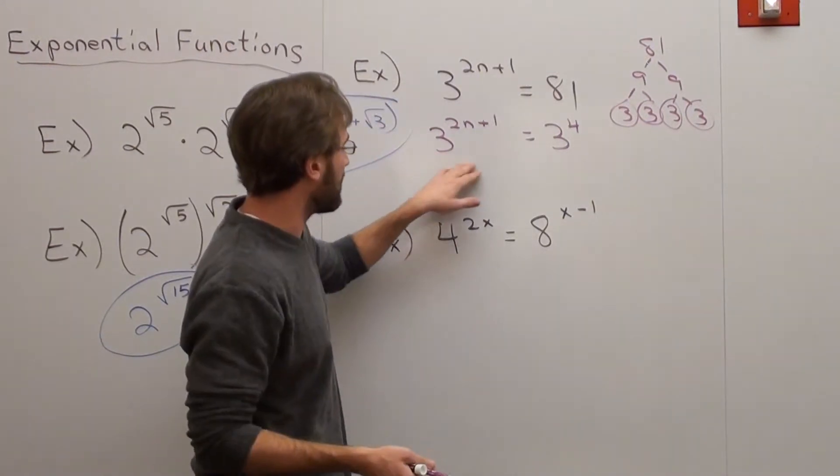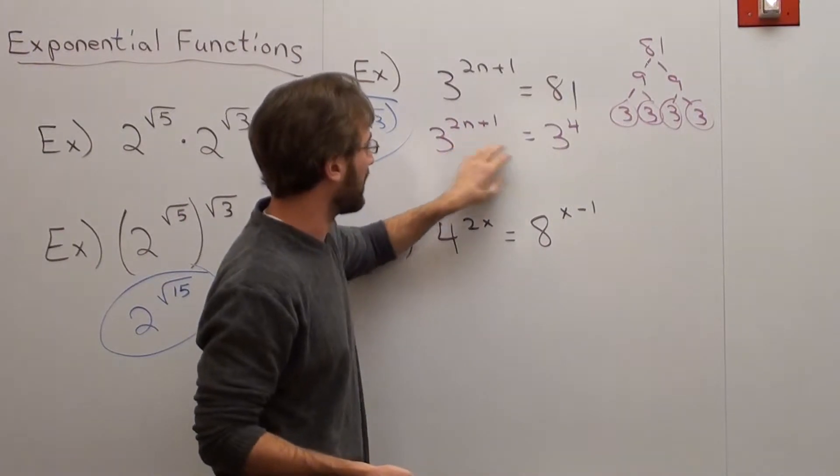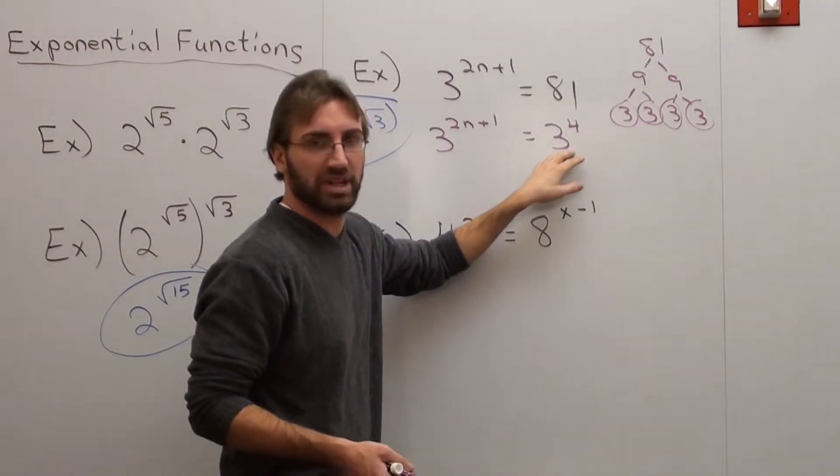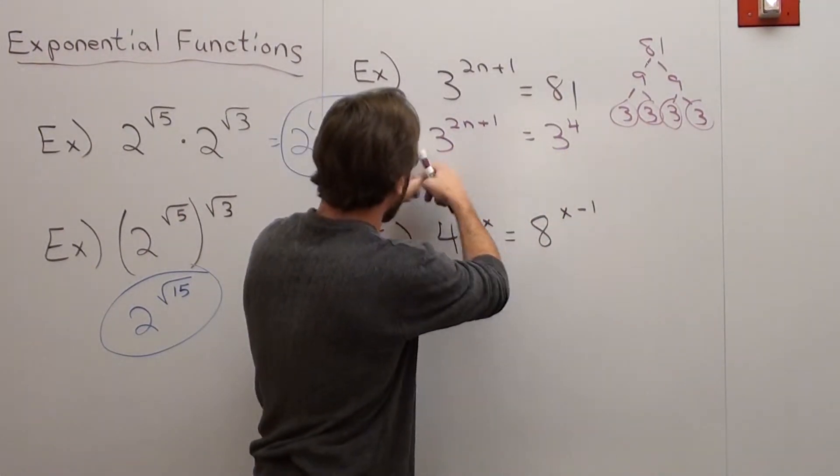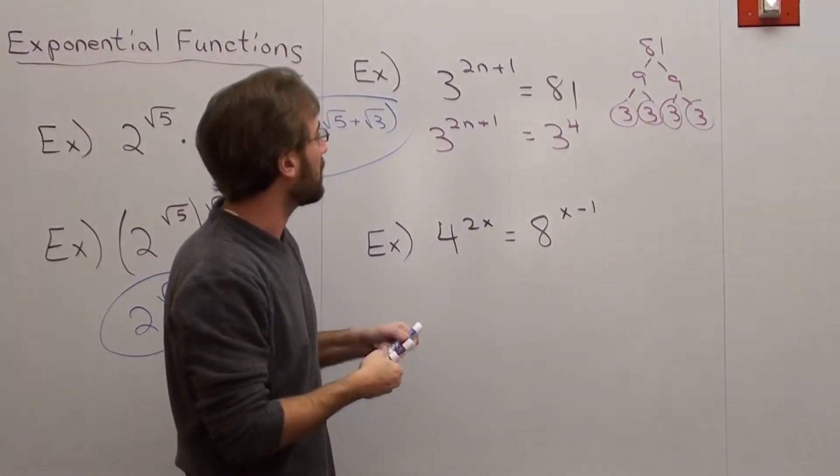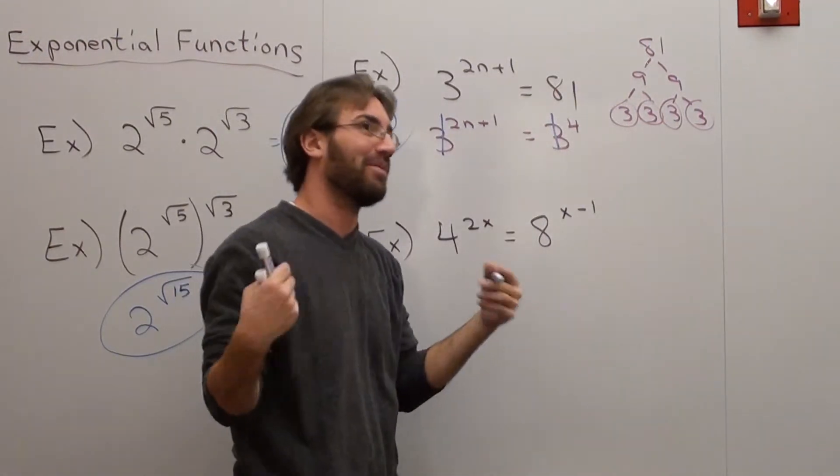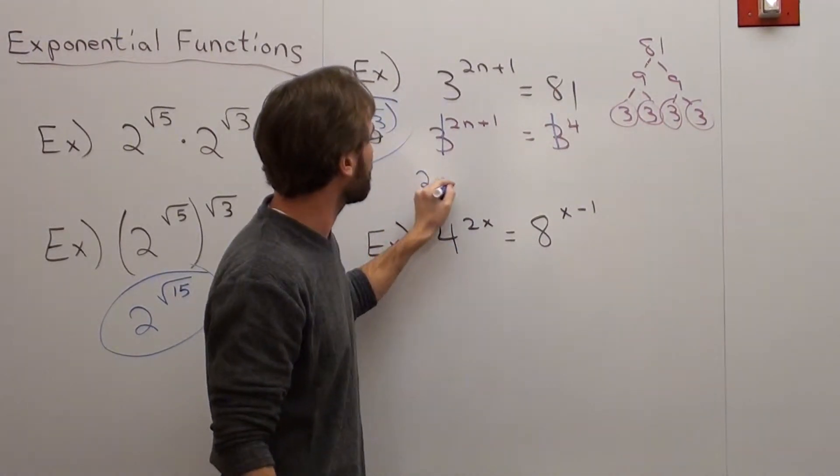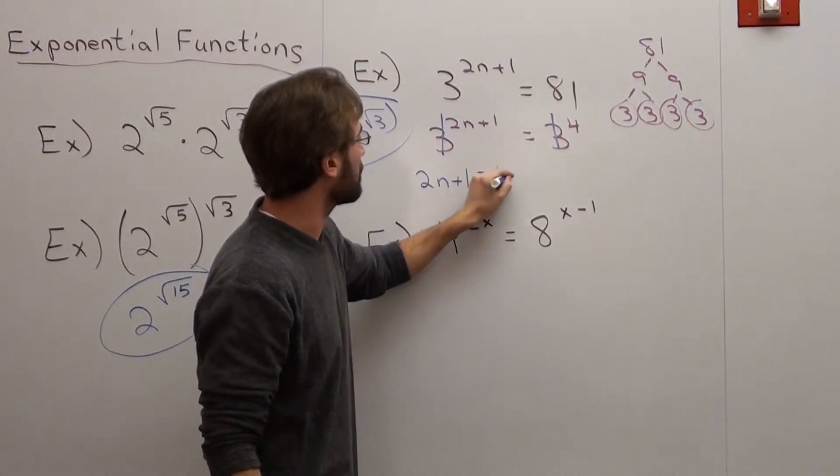What I tell my students is, well, you have a base on one side with an exponent and it's equal to a base on another side with an exponent. There's no addition or subtraction of bases. It's just one base equaling another and they're the same base. All you do is you cancel them out, cancel them out, and you get 2n plus 1 equals 4.